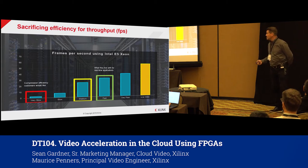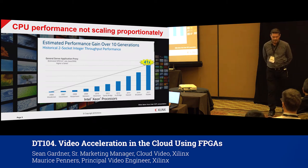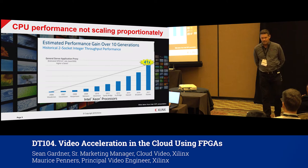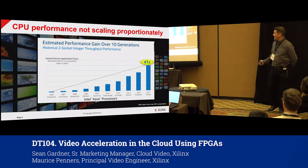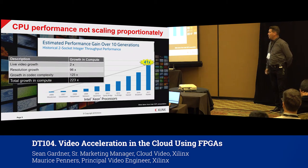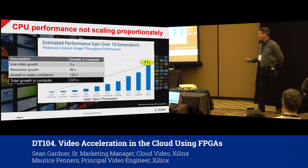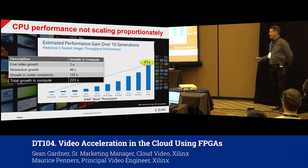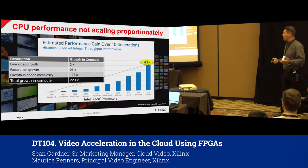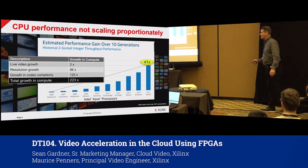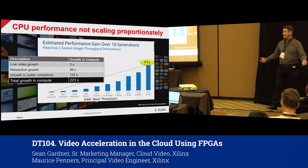From a Xilinx perspective, we've looked at Moore's Law. Over the last 11 to 12 years, Intel has done a great job increasing compute capability — about 41x. But we have live video growing 2x, resolution growing roughly 96x, and codec compute complexity growing as well, giving a total aggregate compute requirement of 223x. That gives us a big discrepancy: 41x CPU improvement versus a 223x compute demand.